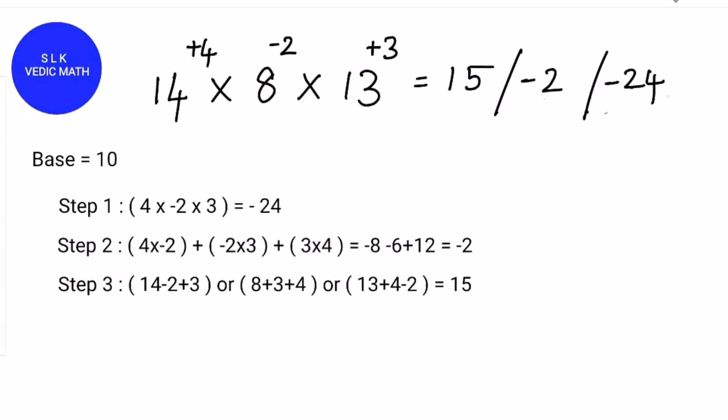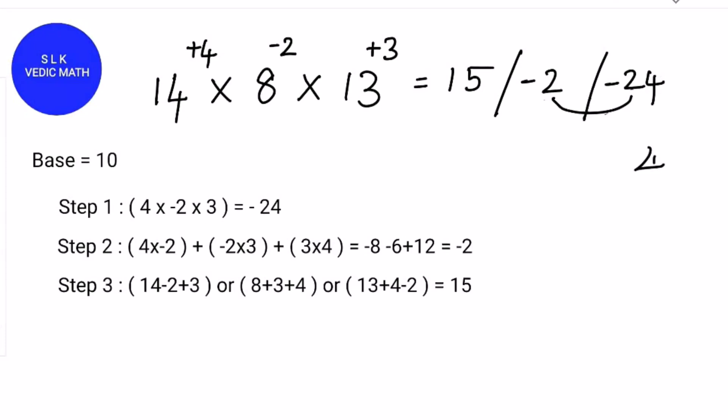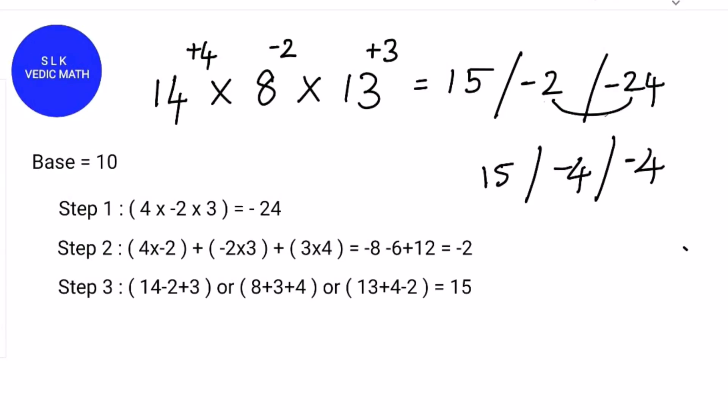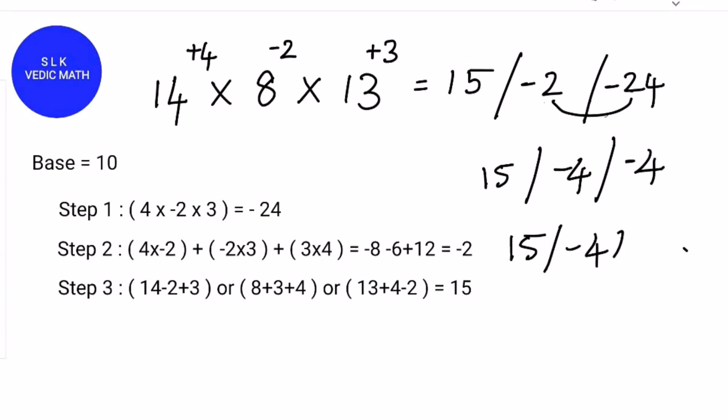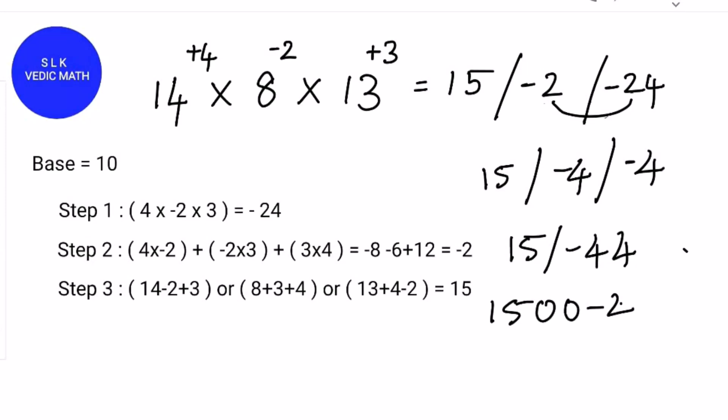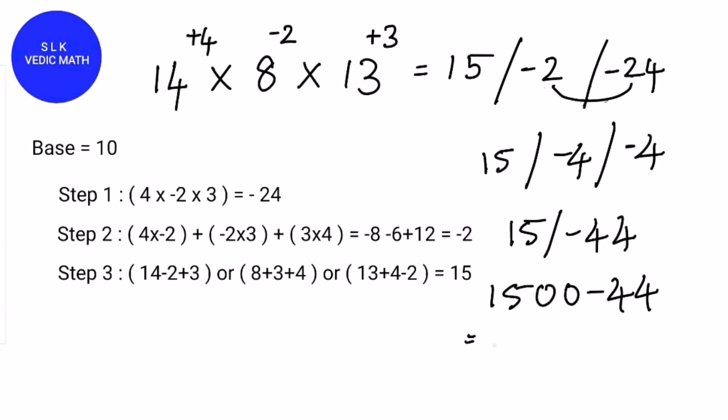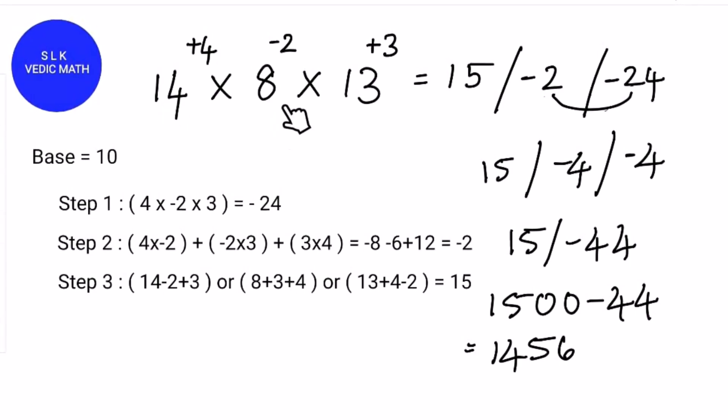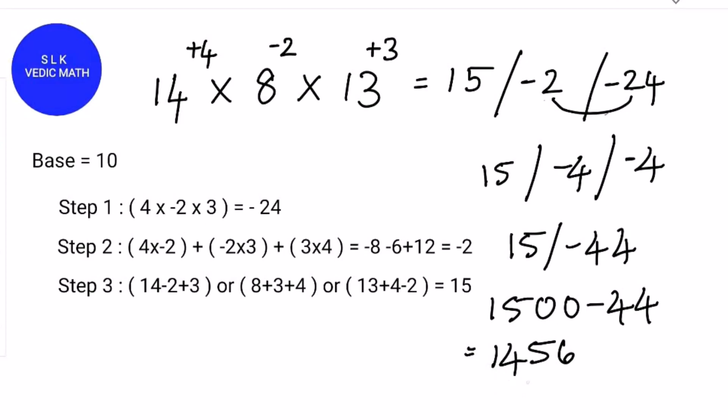24 is a 2 digit number, so add this -2 to -2. We write the 4 down as it is. -2 - 2 is -4. And we write down the 15 as it is. This is nothing but 15 minus 44. 15 - 44 is 1500 - 44 which is 1456. So 14 × 8 × 13 is 1456.